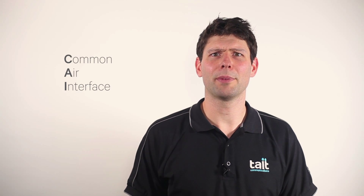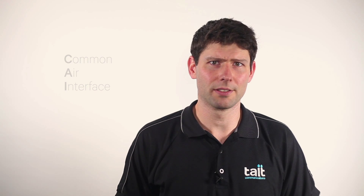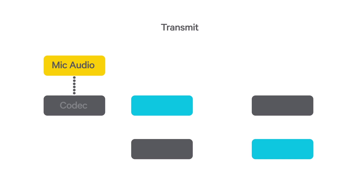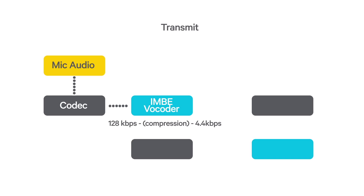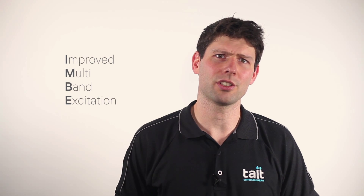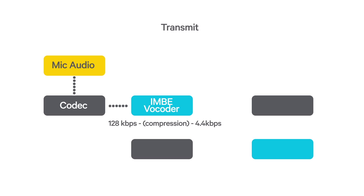On a P25 channel, when the PTT is pressed, the P25 common air interface, or CAI, works as follows. The microphone first converts the speech into an analog electrical signal. A device called a codec samples that signal and converts it into a 128 kilobit per second data stream of digital information representing the voice. A device called a voice coder, or vocoder, then processes that data and uses a technique called improved multiband excitation, or IMBE. This removes much of the background noise by encoding only the characteristics of the signal that represent human voice. It also compresses the voice into a data rate of 4.4 kilobits per second.